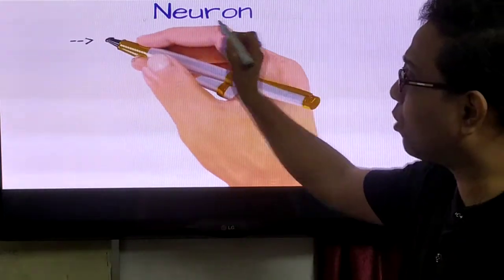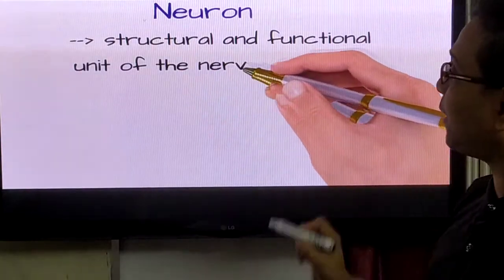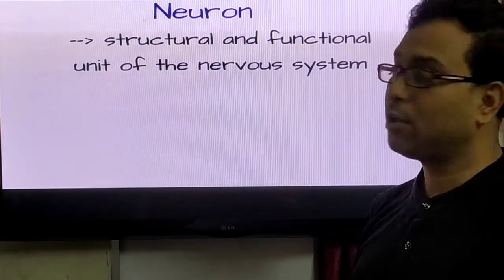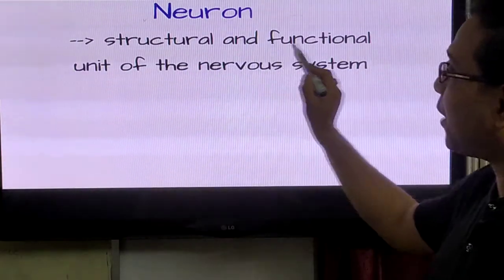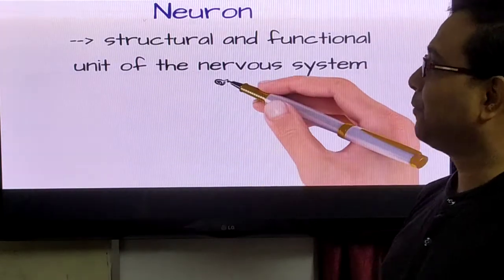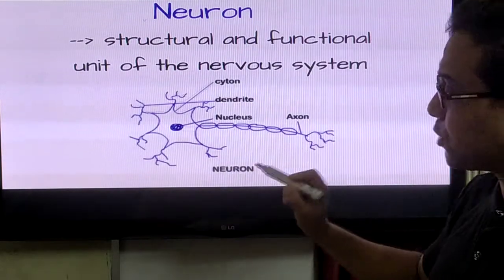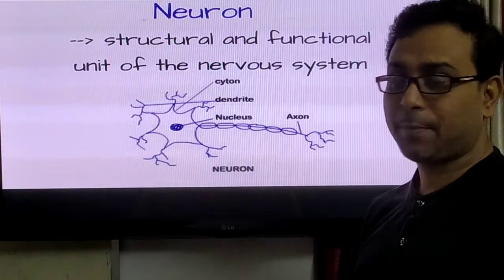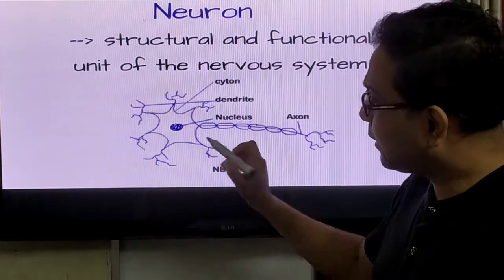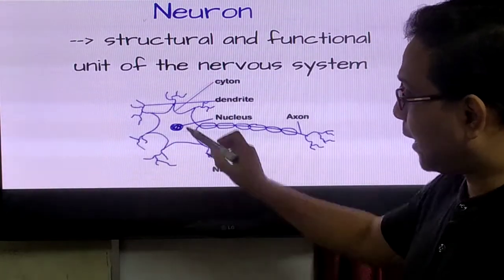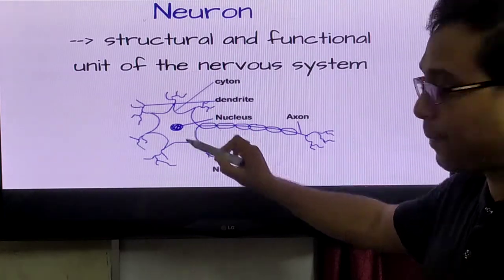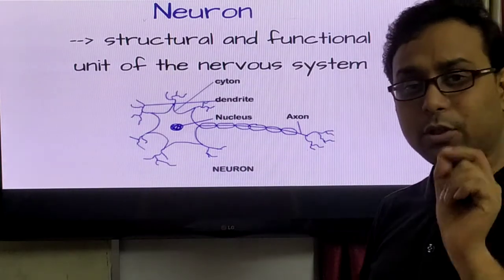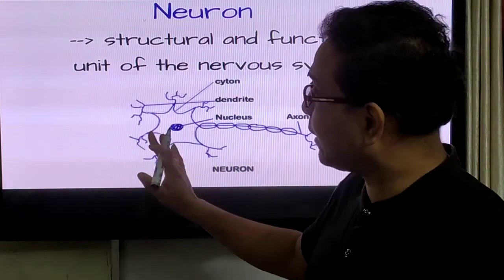Now we discuss the structure of the neuron. Neuron is a structural and functional unit of the nervous system — the most important cell which controls the function of the nervous system. The structure of the neuron: it has the cell body with a prominent nucleus, dendrites emerging from the margin of the cell body, and the long process called the axon, with axon terminals at the end.